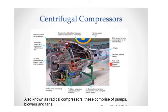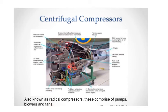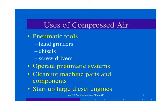Next is the centrifugal compressor, also known as radial compressors. This comprises pumps, blowers, and fans. It consists of an impeller mounted inside a hollowed casing with a diffuser. Here, air can be compressed with the help of this centrifugal compressor.